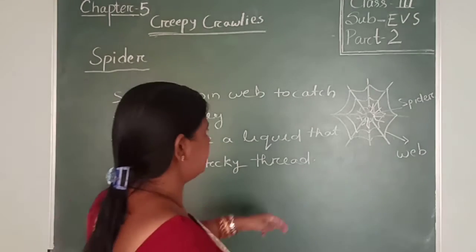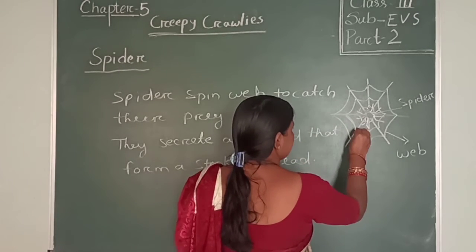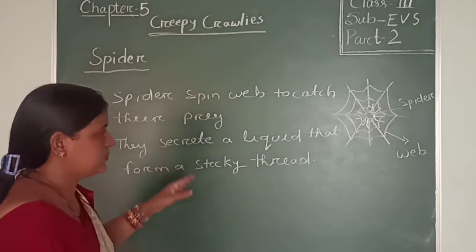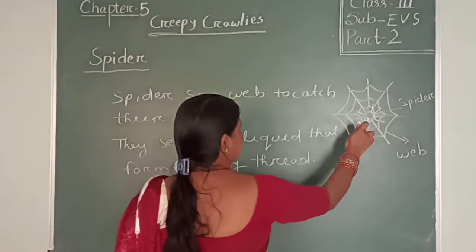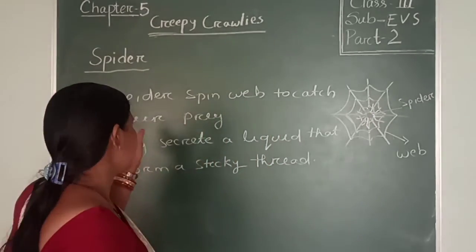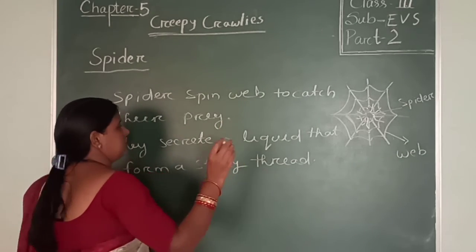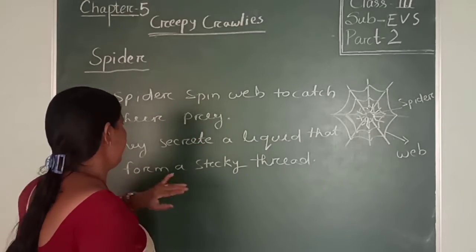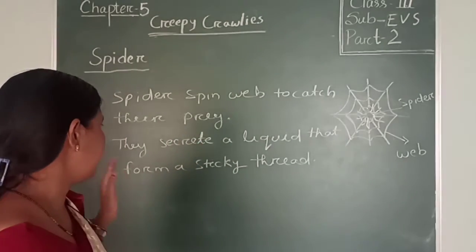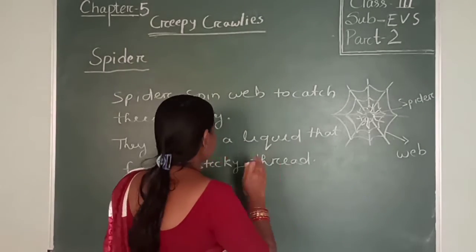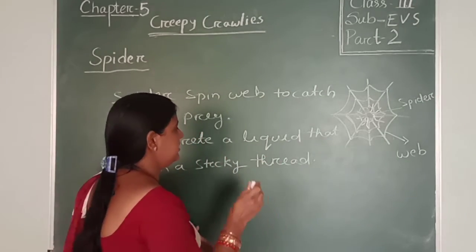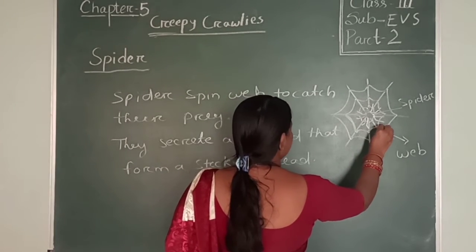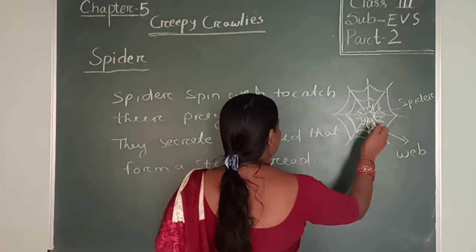Look at here. This one is called a web. This one is the thread-like structure — these are called your web. Spiders spin web like this. They spin web to catch their prey, means they hunt insects to eat. They secrete a liquid from their body that forms a sticky thread. These are the threads — look at it — these are very sticky.